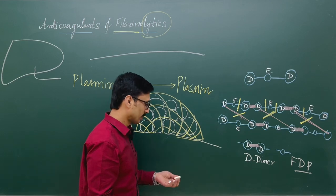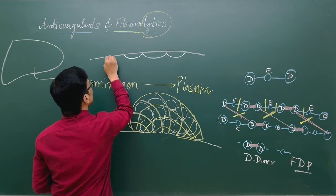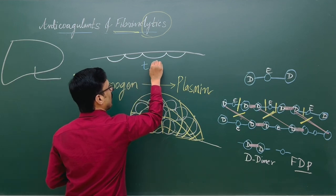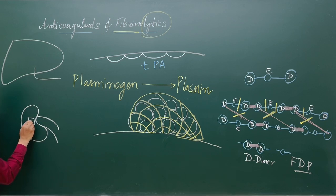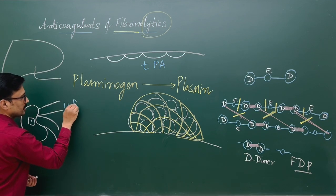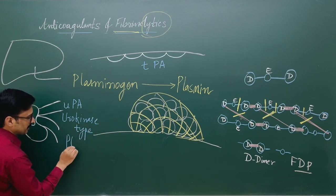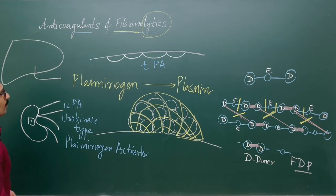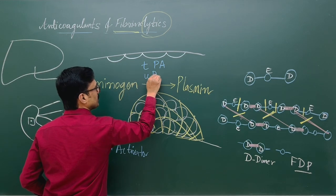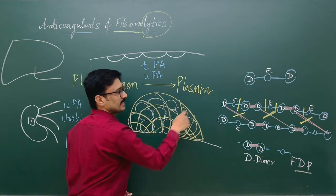Now, how is plasmin activated from plasminogen? Endothelial cells secrete plasminogen activator — that is tissue plasminogen activator, or tPA. Also, the cells of the kidneys secrete the urokinase-type plasminogen activator, or uPA. The role of these plasminogen activators is to convert the plasminogen precursor protein into active plasmin.